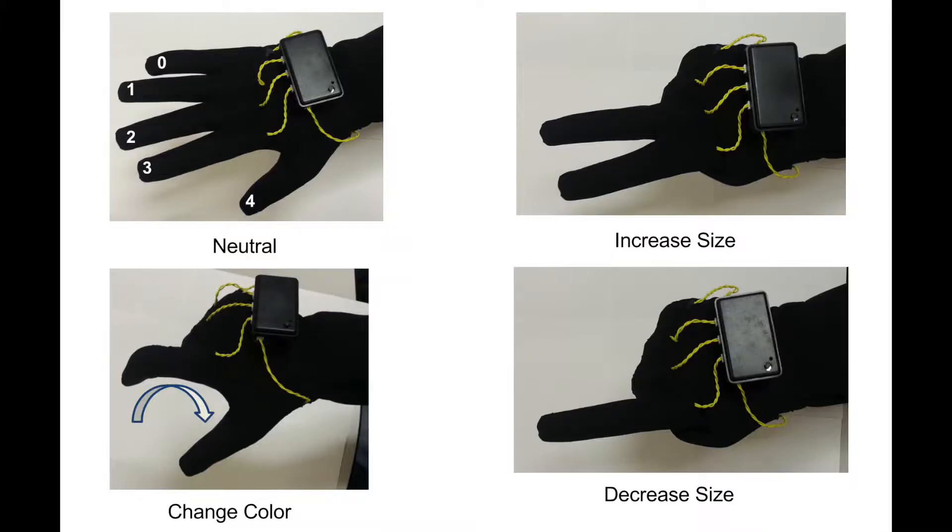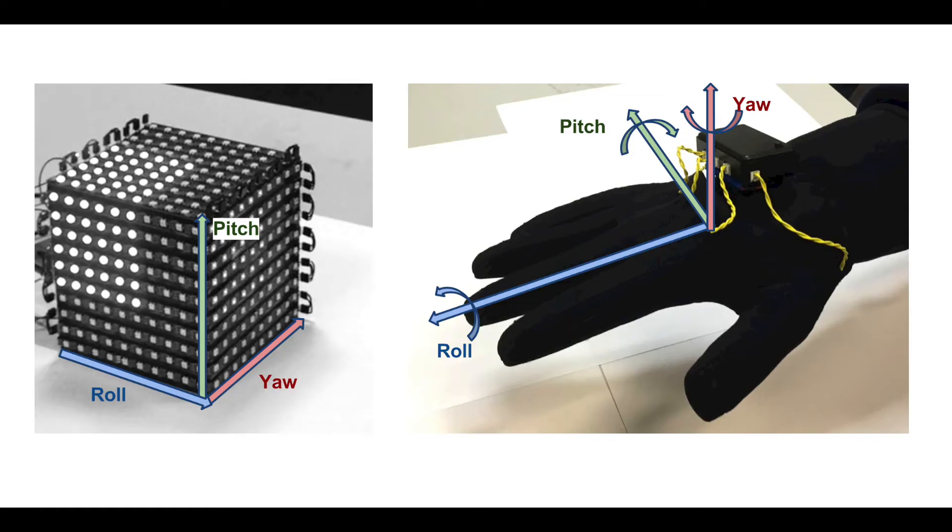The dataglove has multiple sensors that are used for gesture recognition. Bend sensors on each finger are used to change the size and color of the LEDs. An accelerometer and gyroscope in the dataglove use quaternion data which are used to move the LEDs.